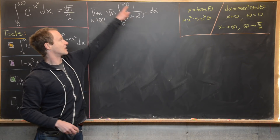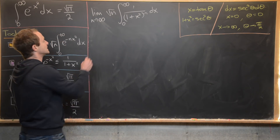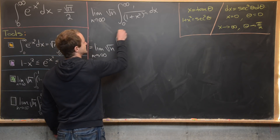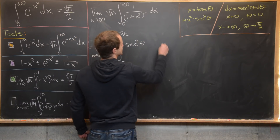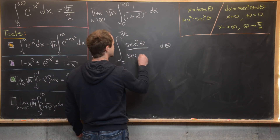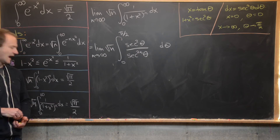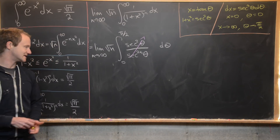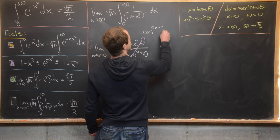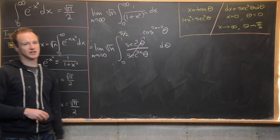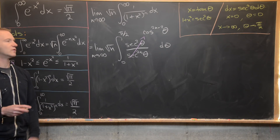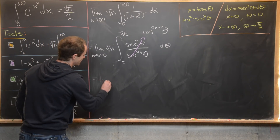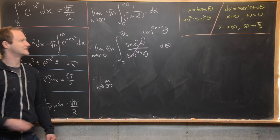After substitution, we get the limit as n goes to infinity of the square root of n times the integral from 0 to pi/2 of secant squared theta over secant to the 2n theta d theta. Using secant equals 1/cosine, this simplifies to cosine to the (2n minus 2) theta — another Wallis integral — so we jump directly to its evaluation.